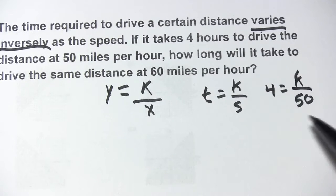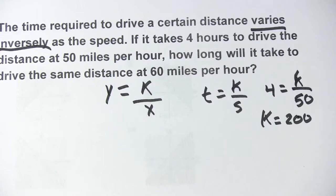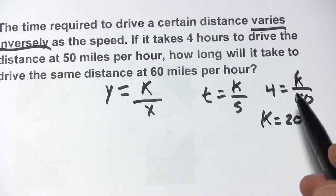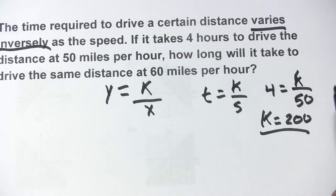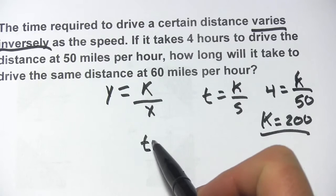So we're going to multiply both sides by 50, we get k equals 200. Then it says, how long will it take to drive the same distance at 60 miles per hour? Well, now we have k and we have a new speed, so we'll just plug it in this formula. So t, that's what we don't know.